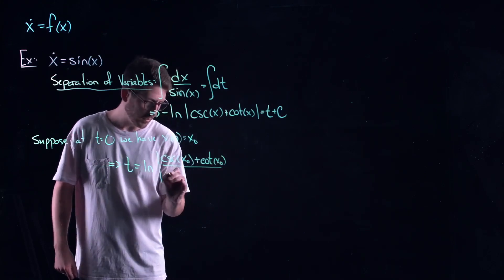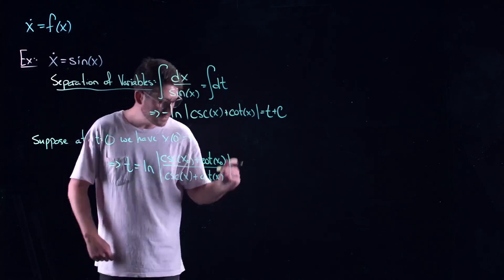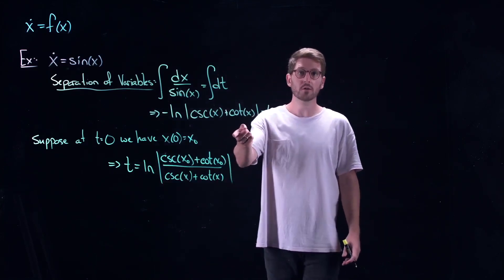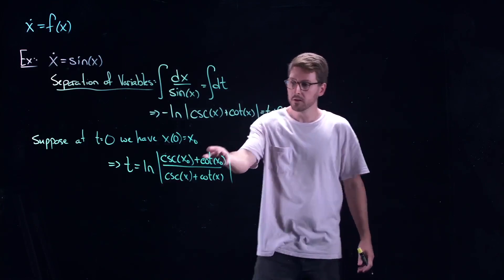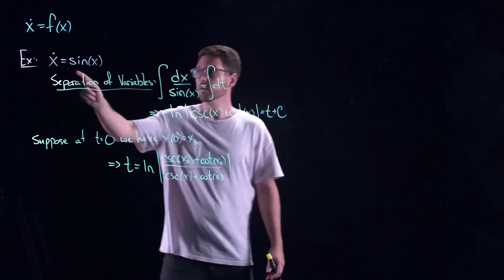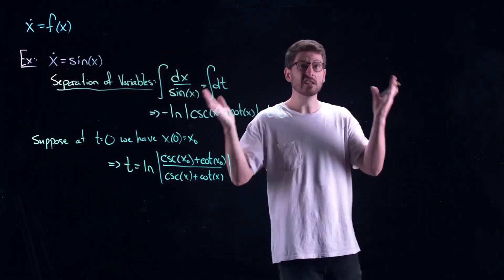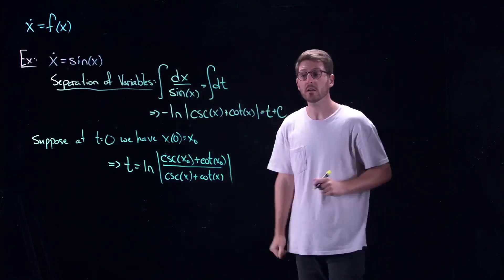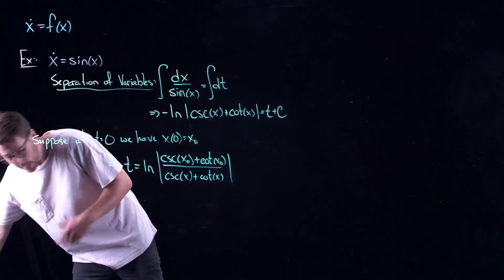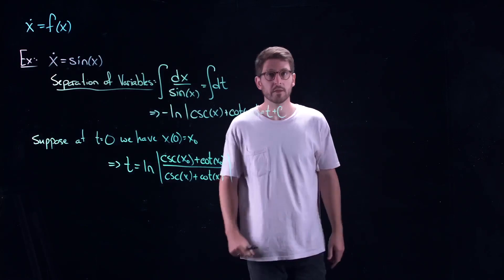What I want to do with this example is convince you that the geometric interpretation of dynamical systems is so much better. Because if I say that's the solution to the differential equation, what are you going to do with it? This is an implicit solution — t is isolated as a function of x, but the original problem was given as x as a function of t. I have no idea what solutions look like, how they behave, where they go.